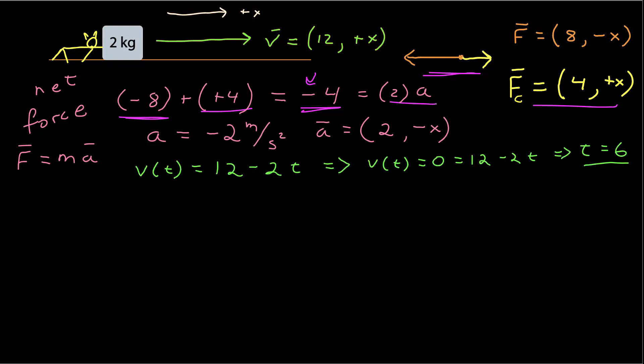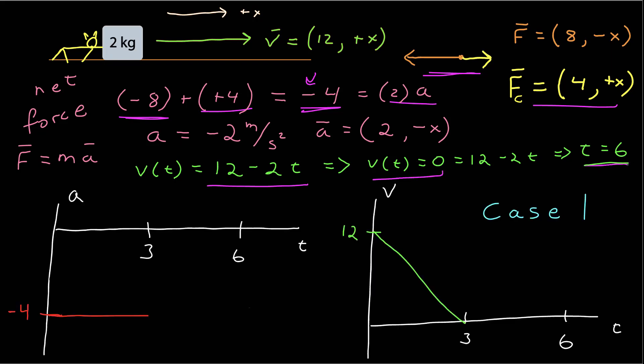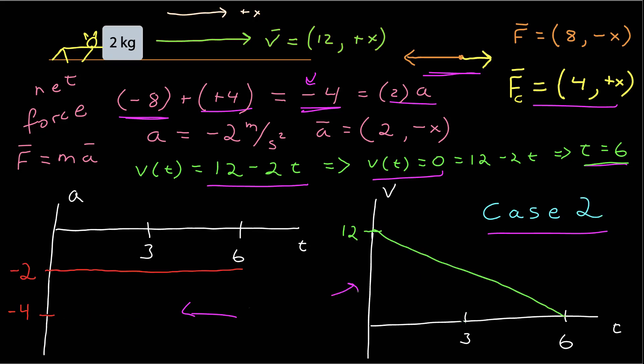We can calculate the velocity as a function of time, which in this case looks like 12 minus 2t. It's still decreasing, and we can find when it comes to rest — which is now 6 seconds later. In case 1, we had an acceleration of negative 4 meters per second squared, which brought us from 12 meters per second to 0 in 3 seconds. But in this case, a lower net force gave us a lower acceleration, meaning it took 6 seconds to bring the velocity to 0. Two forces resulted in a smaller net force, a lower acceleration, and a longer time to stop.